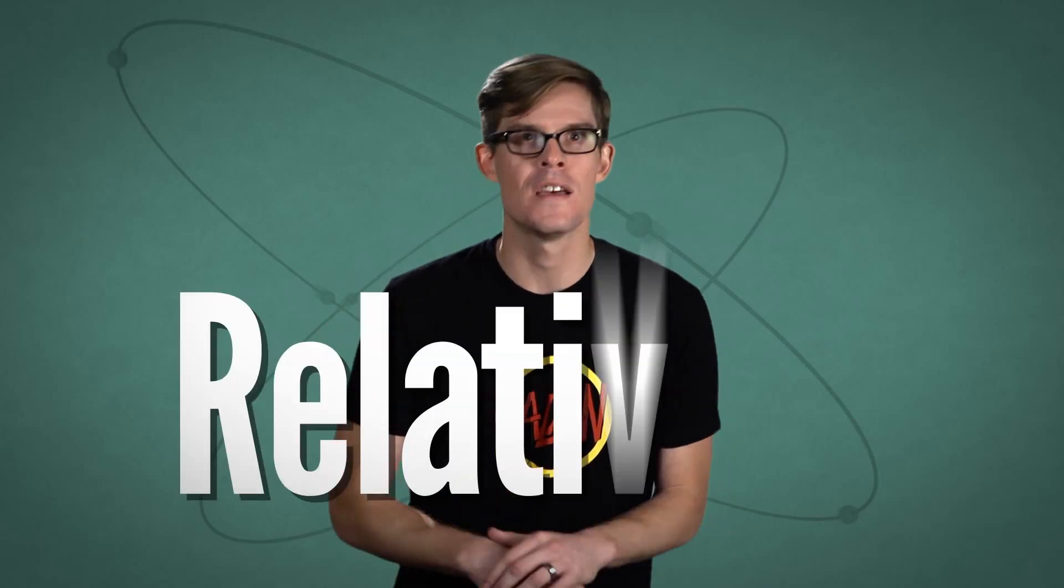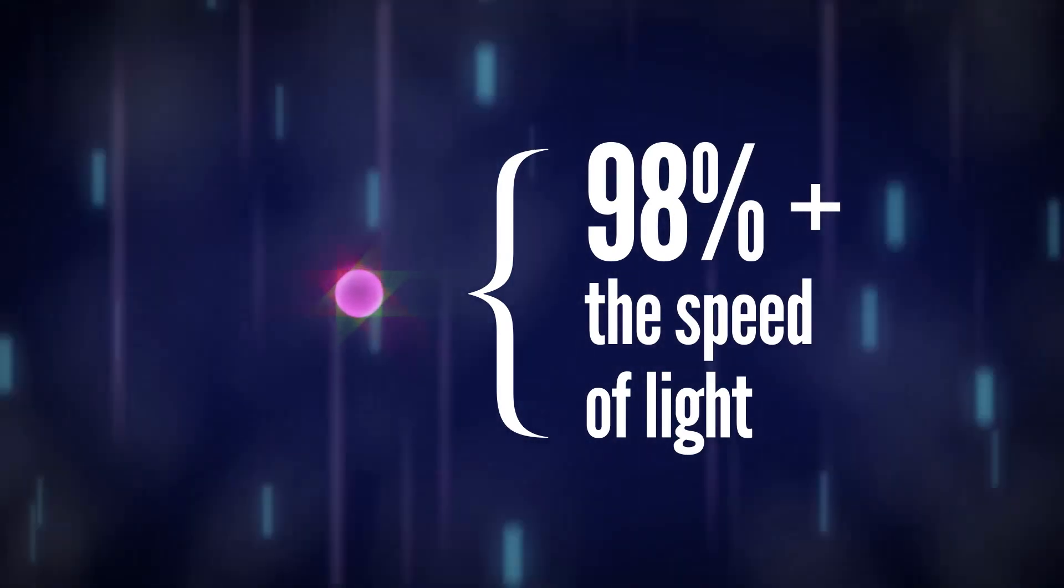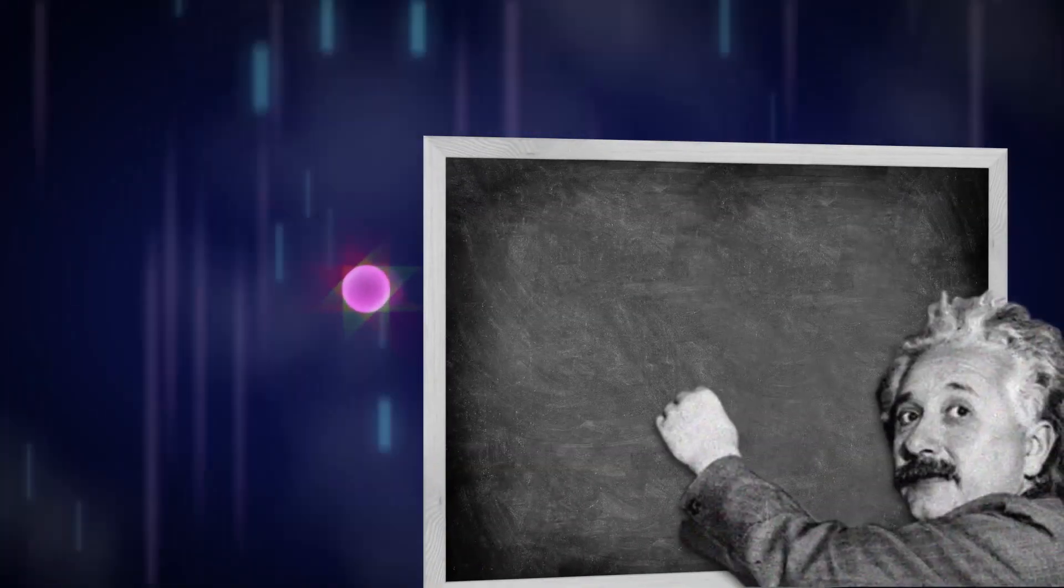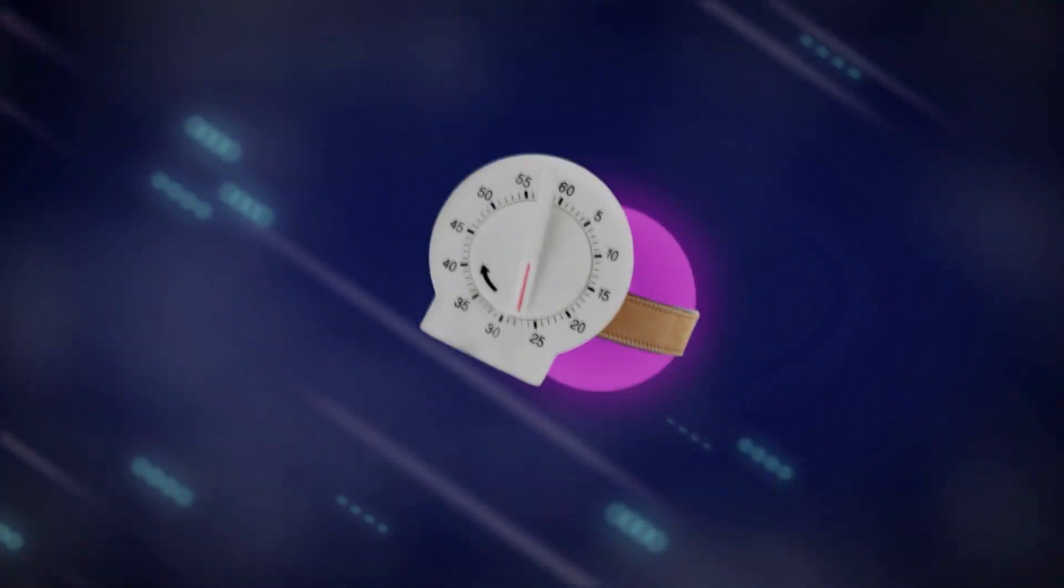The answer is relativity. Because muons are traveling more than 98% the speed of light, they experience a phenomenon predicted by Einstein called time dilation. Let's say there's a kitchen timer strapped to the muon. Because it's traveling so fast to us from our reference point here on Earth, the kitchen timer ticks more slowly.